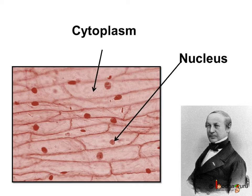Here is the microscopic view of onion peel. Each cell has cytoplasm, a round nucleus, and a cell membrane. The cell membrane gives shape to the cell.